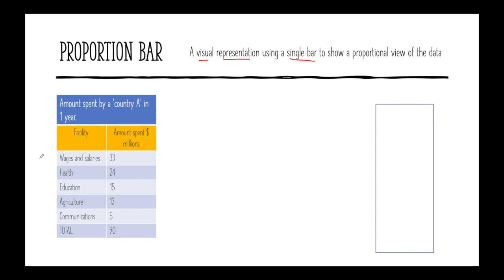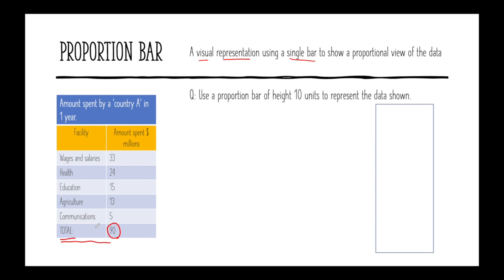Let's take a look at this data here — it's the same data we saw with wages and salaries, the amount of money spent by a country in one year. The total amount of money spent by the country was $90 million. The question is: use a proportion bar of a height of 10 units to represent the data shown. So we're going to use a proportion bar to represent the data in this table.